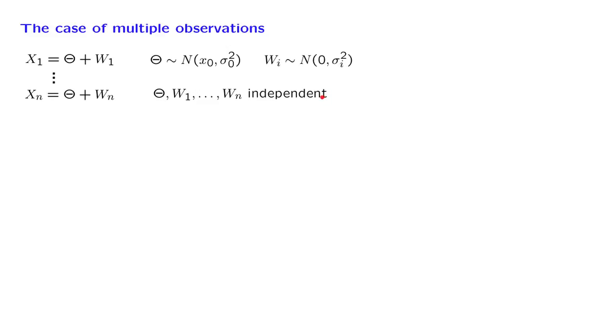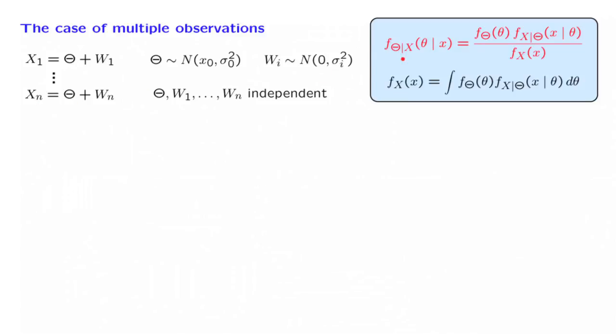Based on these assumptions, we would like to estimate theta on the basis of the x's. As usual in the Bayesian setting, what we want to do is to calculate the posterior distribution of theta given the x's. The Bayes rule has the usual form for the case of continuous random variables.